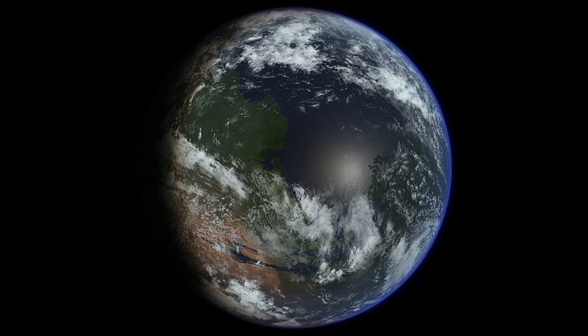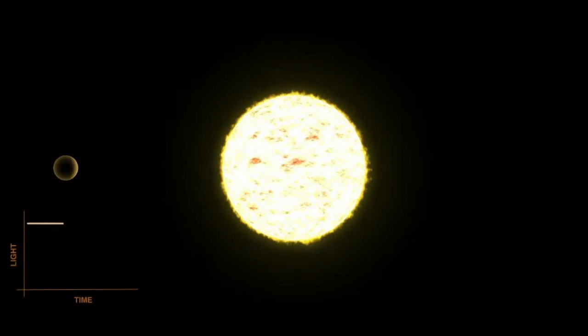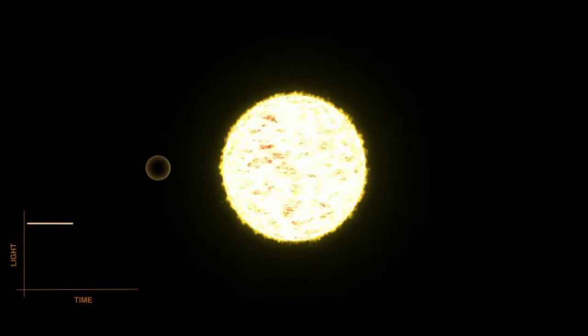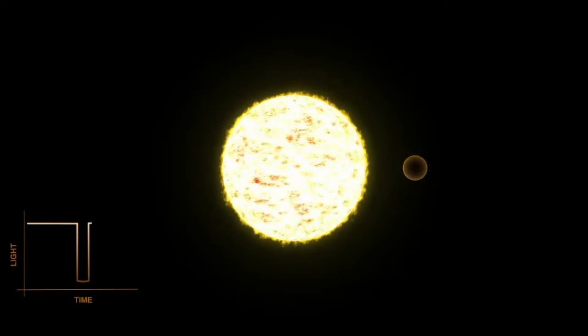But however forgiving of Earth-like planets hot Jupiters may be, they were never going to point us in the direction of extraterrestrial intelligence. To find another Earth, we need another method. And we will be discussing that method in the next episode.